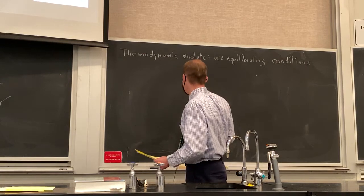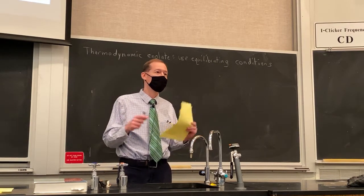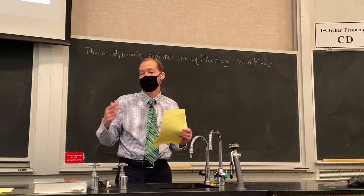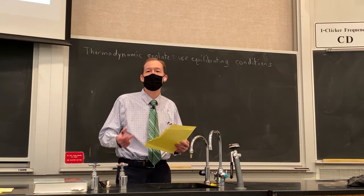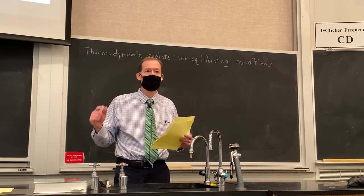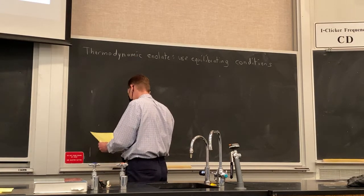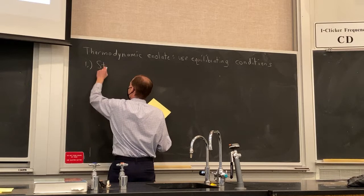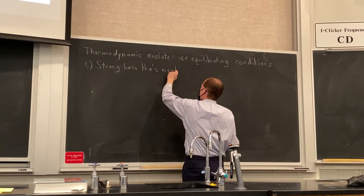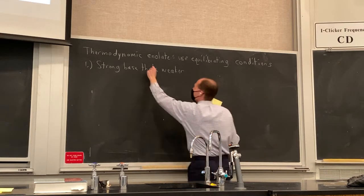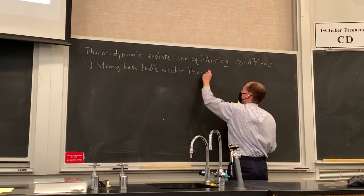In contrast, to make a thermodynamic enolate we want to promote equilibration. We know that regardless of the conditions, the kinetic enolate will always be formed the fastest. What we need to do is accelerate or promote the equilibrium so that the less stable kinetic enolate can equilibrate and give us the more stable thermodynamic enolate. The first thing we want to do is use a strong base that's weaker than LDA — one that won't completely deprotonate our ketone, leaving a little bit of enolate and a lot of ketone present.